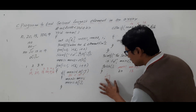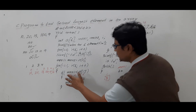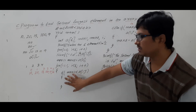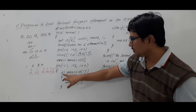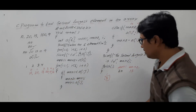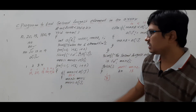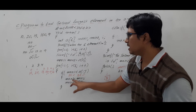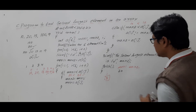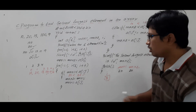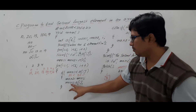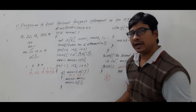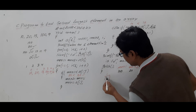i=3, condition true. Is max1 (20) less than a[3] (100)? Yes, this condition is true. So max2 = max1 = 20, and max1 = a[3] = 100. Now max1 = 100, max2 = 20. Increment i to 4.